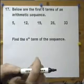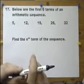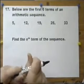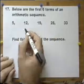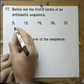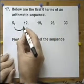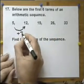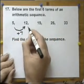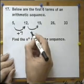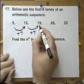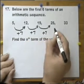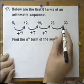Below are the first six terms of an arithmetic sequence. If we look at these numbers, they go up in 7s. 7 onto 5 is 12, 7 onto 12 is 19. Add 7 gives us the next term.